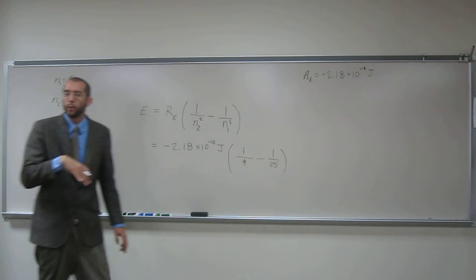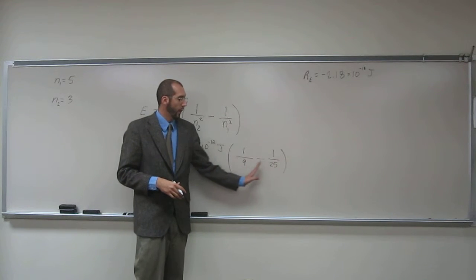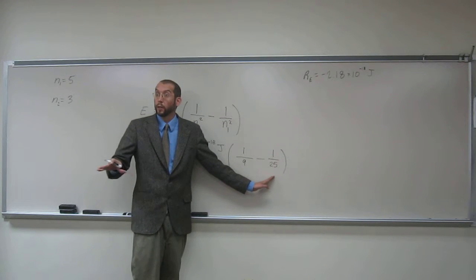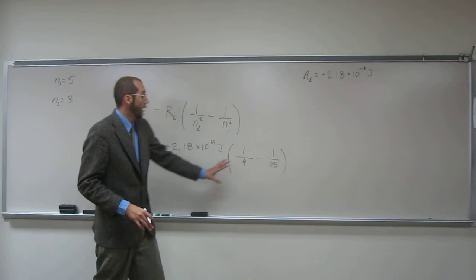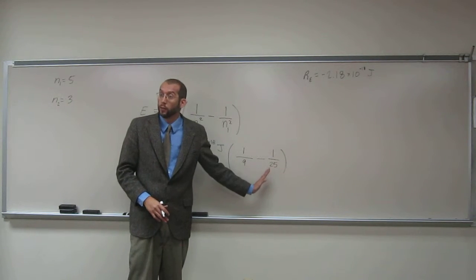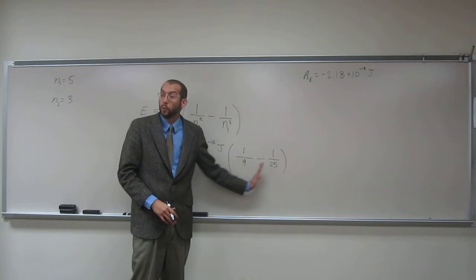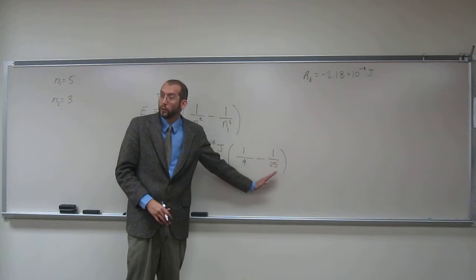Okay, so this is what I was referring to earlier when I kind of stopped. This number is bigger than this number. Is everybody clear on that, right? So, since that's the case, we're going to get a positive number here. Does that make sense? Since we're subtracting, we're adding a bigger number and subtracting a smaller number from it.